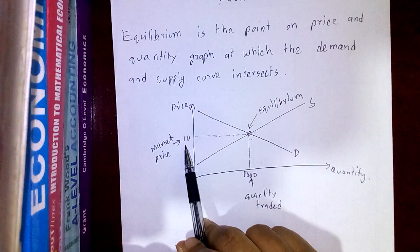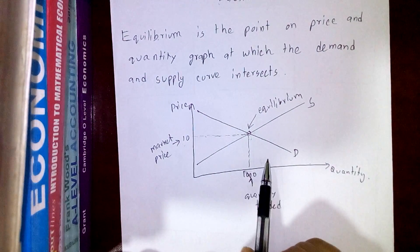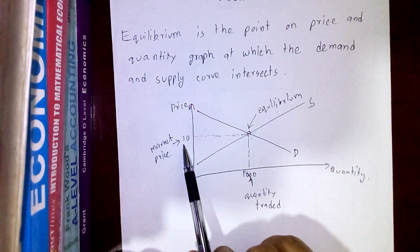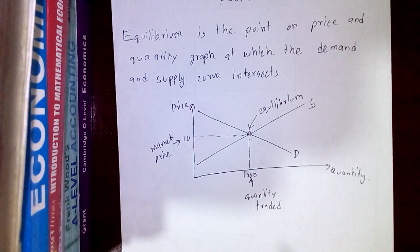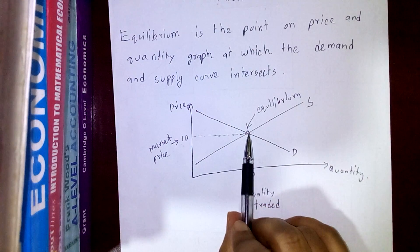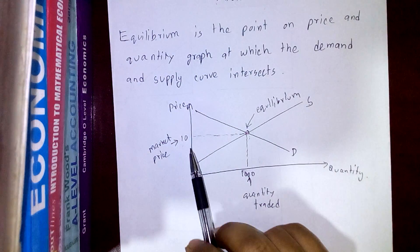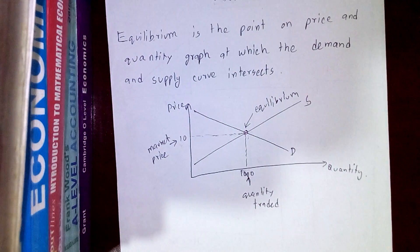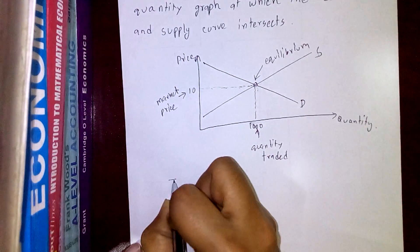Normally we buy products at different prices. The question is why do we buy a product at a particular price? The price of a product is determined by equilibrium — wherever the demand and supply curve intersect is the equilibrium point, and the price set at this point is the market price or equilibrium price.